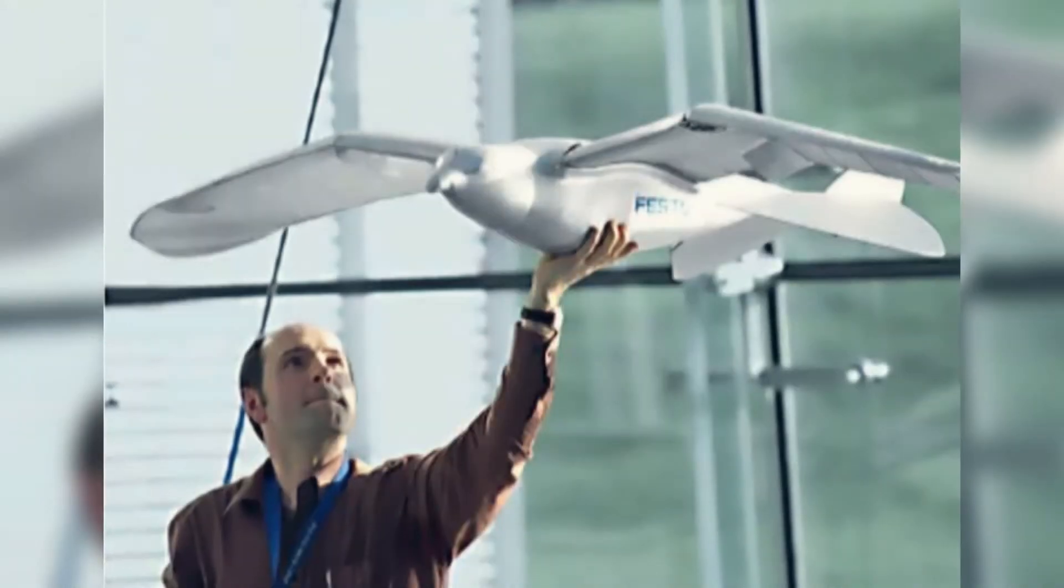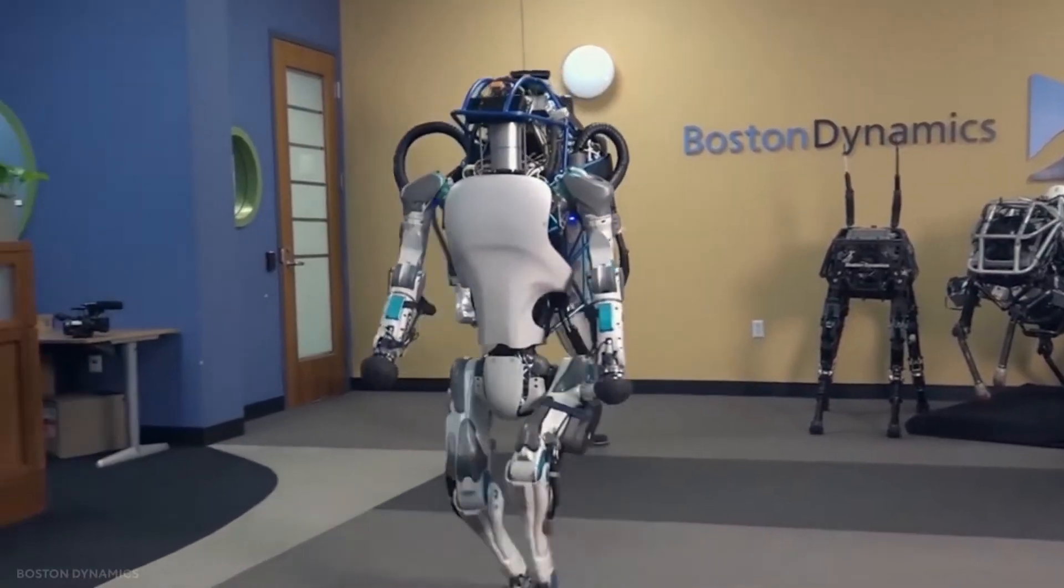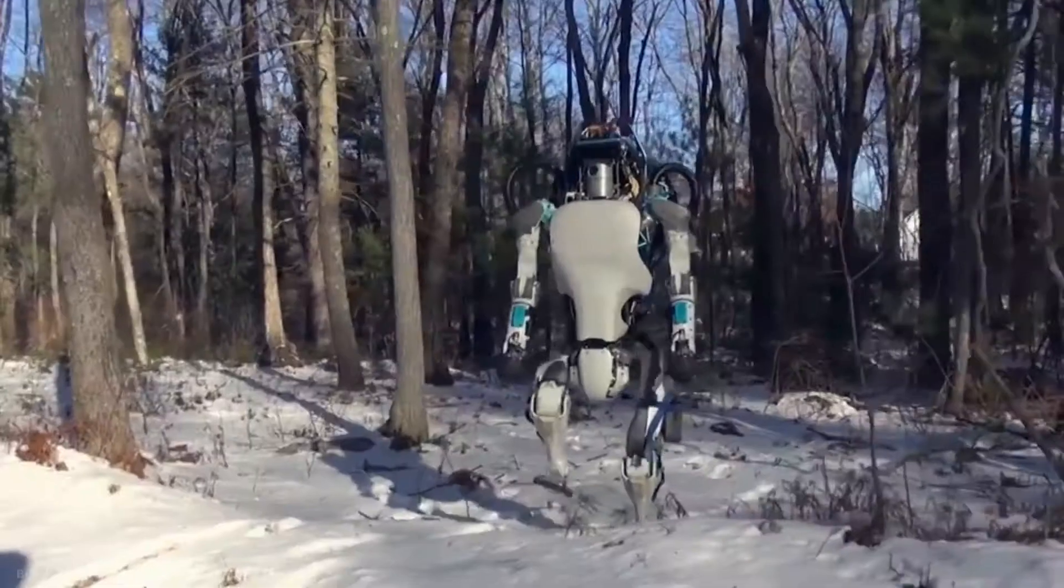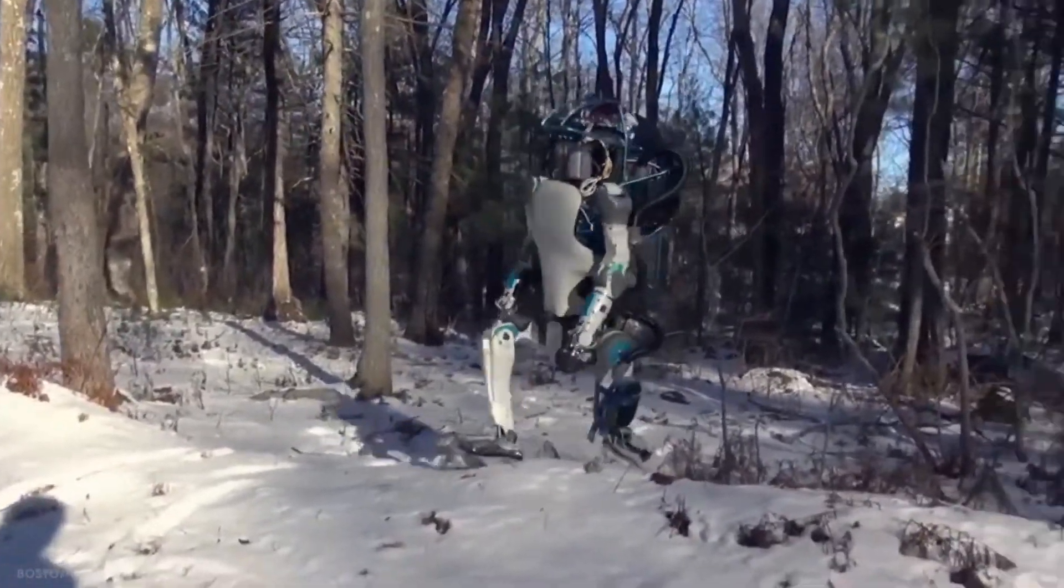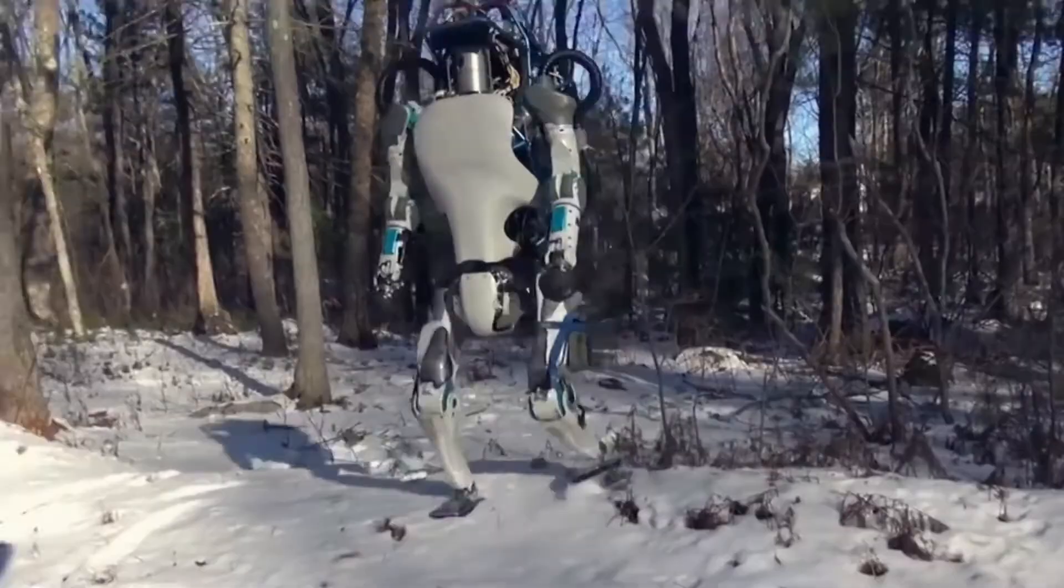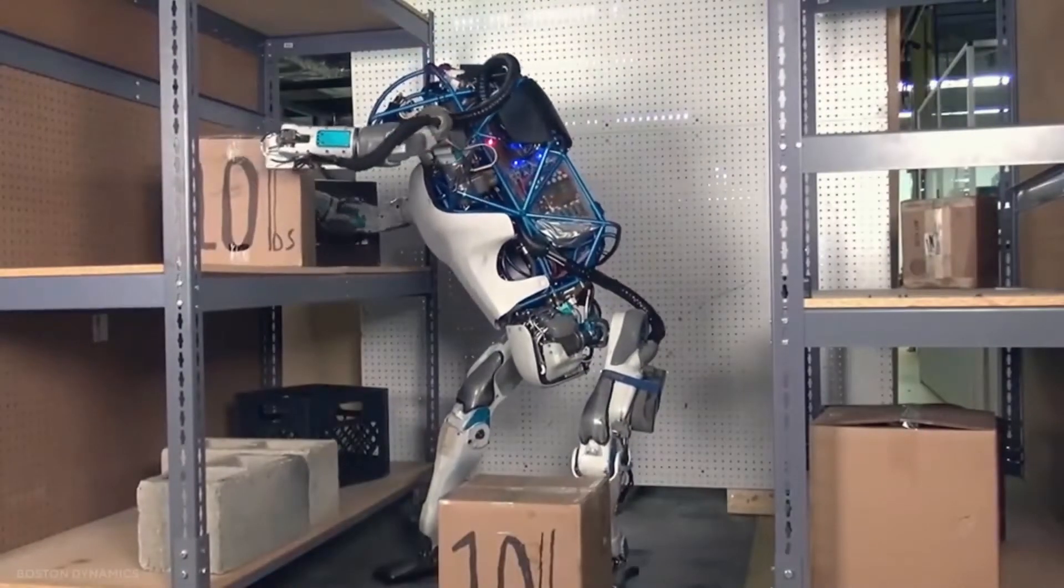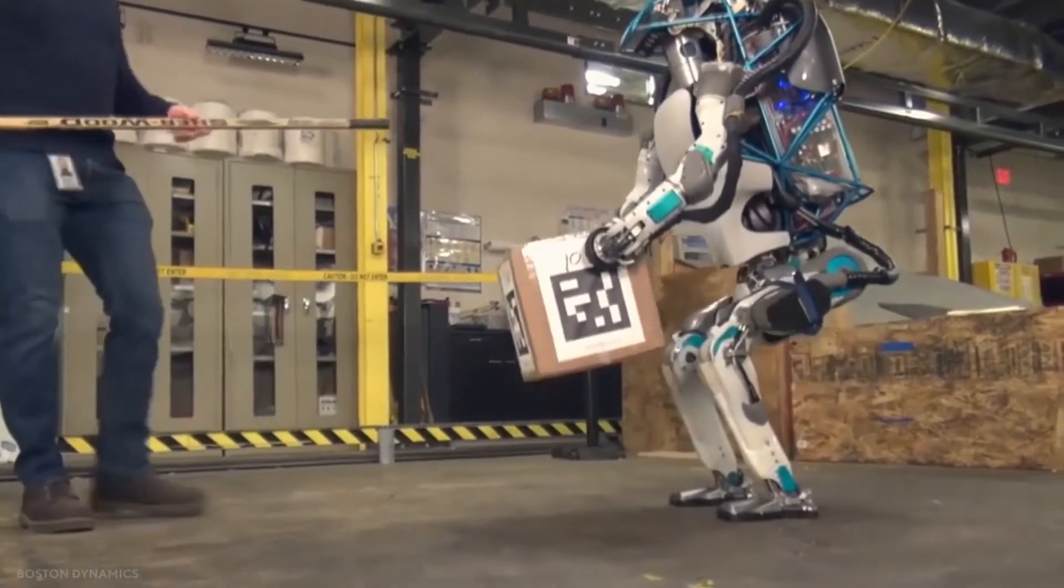But probably the most impressive so far is the Humanoid Robot Atlas by Boston Dynamics, a less charming version of Chappie that can run, do cartwheels, backflip, 360s, and all sorts of tricks.